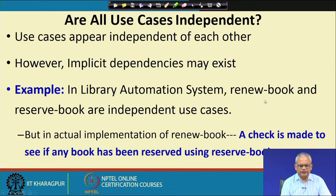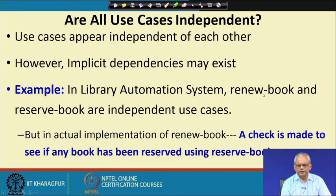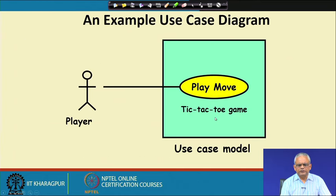Another example: if a member wants to renew a book, he presents the book, but if another member has reserved that book, then he cannot renew it. So the success of the renew book use case depends on whether another member has reserved the same book. There is a dependency — the renew book is dependent on the reserve book. This is the use case model: a very simple, elegant model.